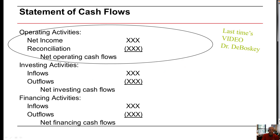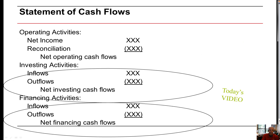In the last lecture, we covered the operating section of the Statement of Cash Flows, and we saw how to reconcile from net income, which is an accrual-based measure, to net operating cash flows, which is a cash basis measure. We will now continue to learn more about the Statement of Cash Flows and look at the investing section and the financing section in more detail, which will be the focus of today's video.